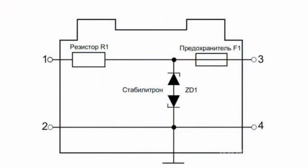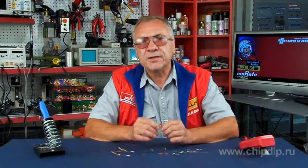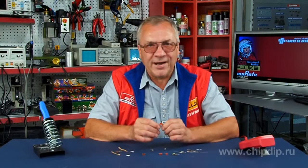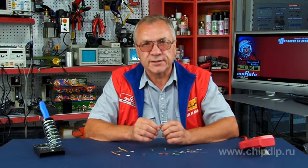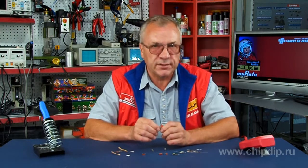Simple as well as double surface stabilitrons, consisting of two simple ones connected by anodes, are used in circuit technology of power supply units. Such a paired diode has symmetry under positive or negative turn-on voltage.